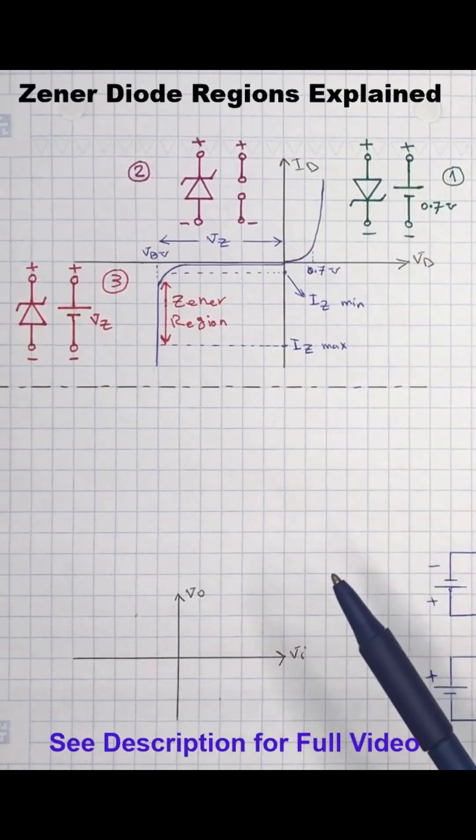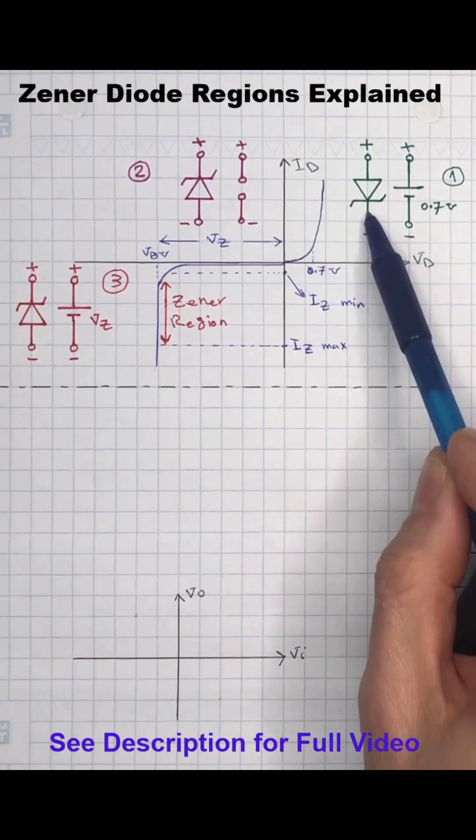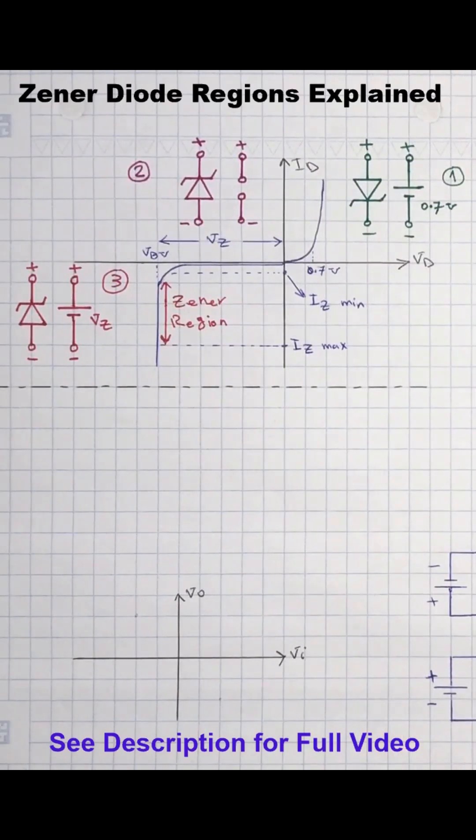This is a Zener diode symbol. Zener diode consists of a PN junction. P terminal called anode and N terminal is called cathode. Here we can see the Zener diode IV curve.